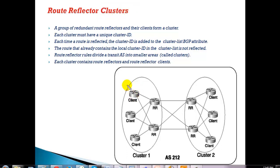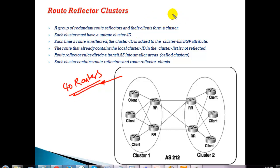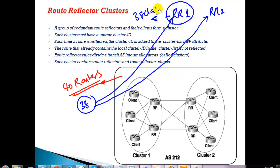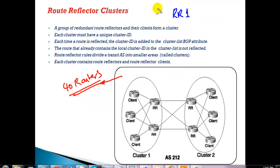In clusters, let's take an example where your transit AS is very big — say more than 40 routers running in my transit autonomous system. If I go with a normal route reflector concept and make two RR servers, RR server one and RR server two, then the remaining 38 routers will be my clients. Each client has to peer with both RR server one and RR server two, and the servers have to peer with all 38 clients — making the configuration very large.